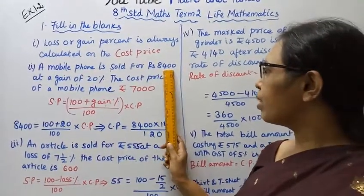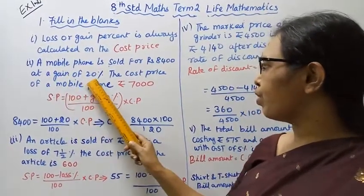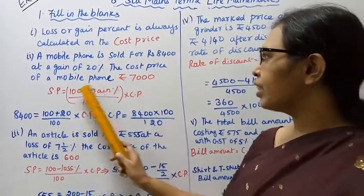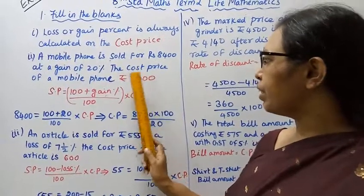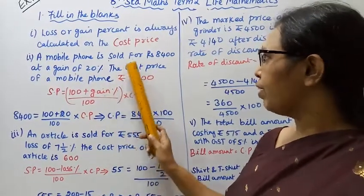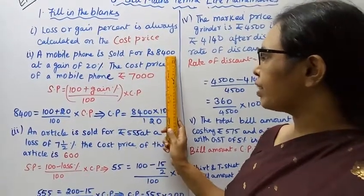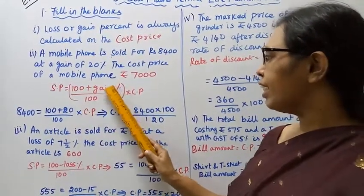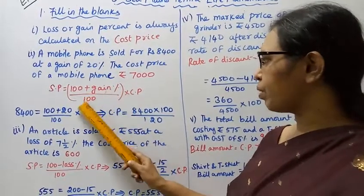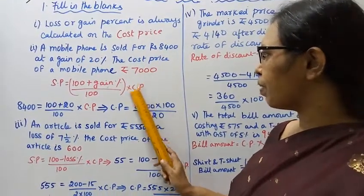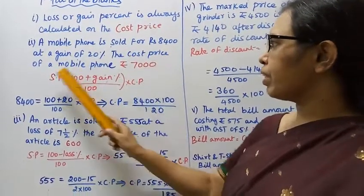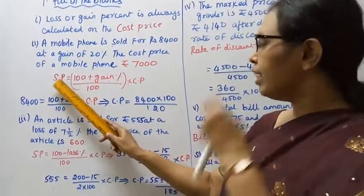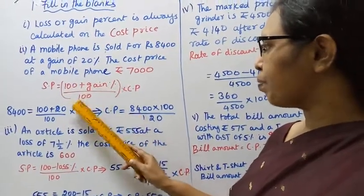Second: your mobile phone is sold for rupees 8400 at a gain of 20%. The cost price of the mobile phone is rupees 7000. The selling price is given, gain percent is given. The formula is: selling price equals 100 plus gain percent divided by 100, into cost price. We need to find the cost price.